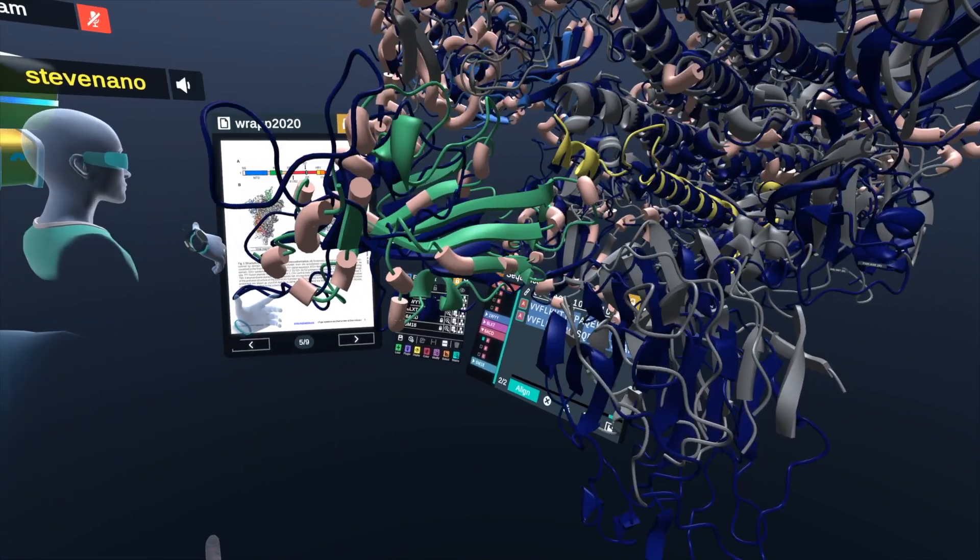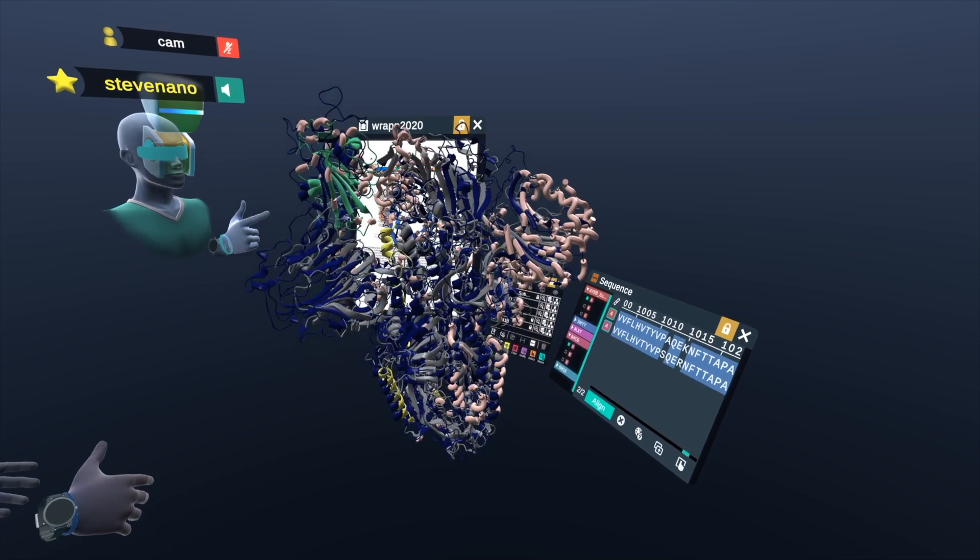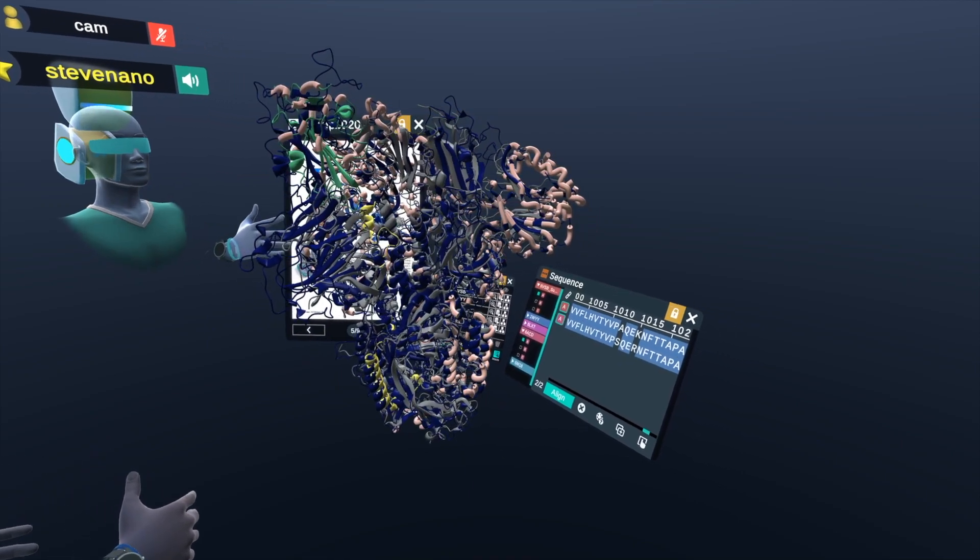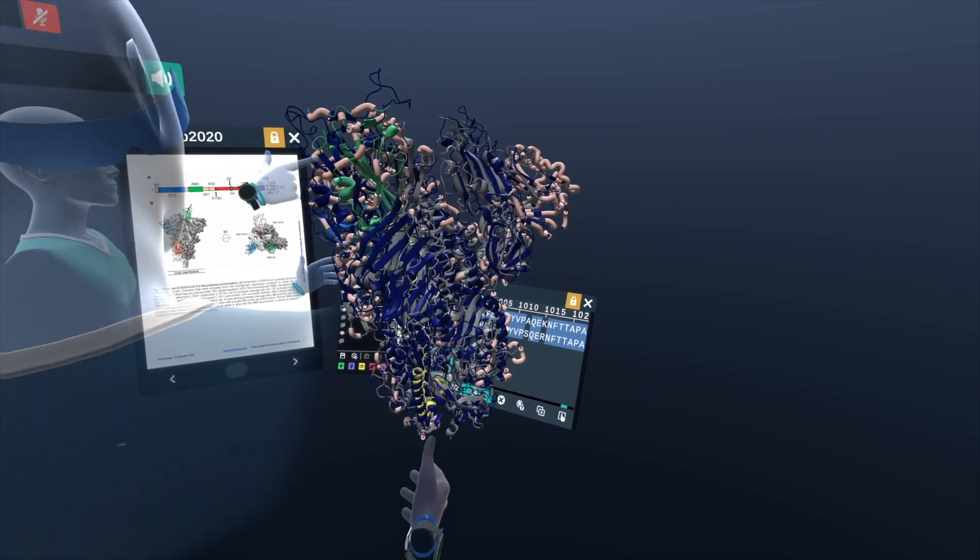And we could do actually an overlay. So I'm going to show both of those structures here. So in this navy blue color, we have the original spike protein from the original SARS outbreak.